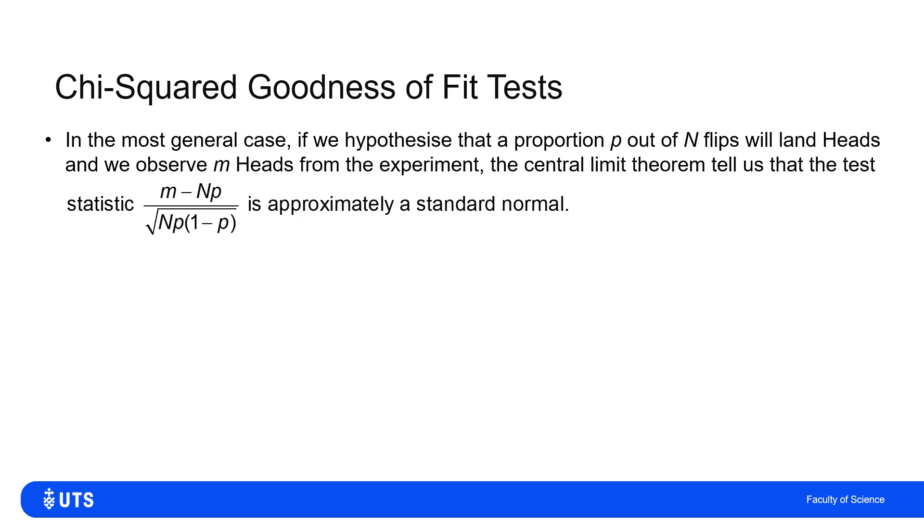Before I return to the specific example, I want to discuss the general case. If I flip the coin n times and I expected to have a proportion p, if my hypothesis were correct, proportion p of heads, but instead I observed m heads, then the central limit theorem tells me that the distribution of m minus the hypothesized population mean of np heads divided by the population variance over n would be approximately standard normal.